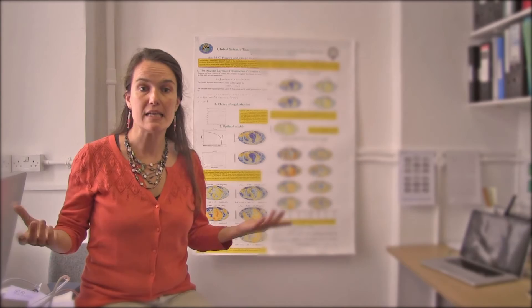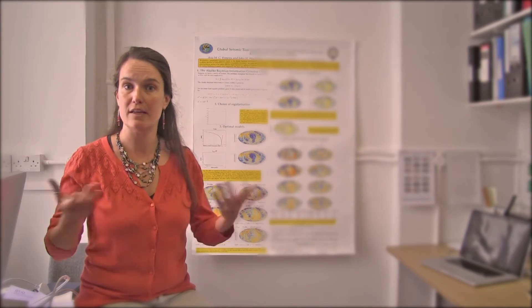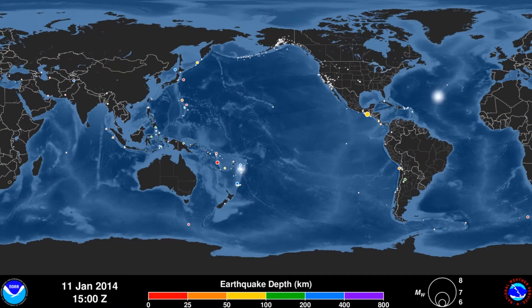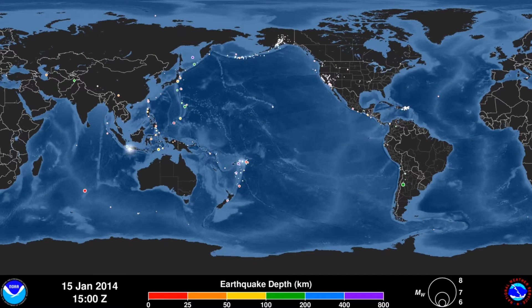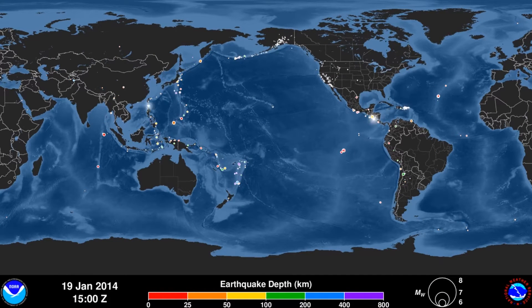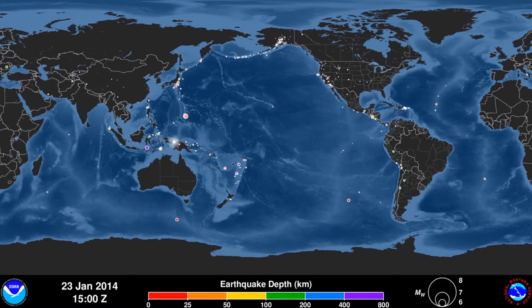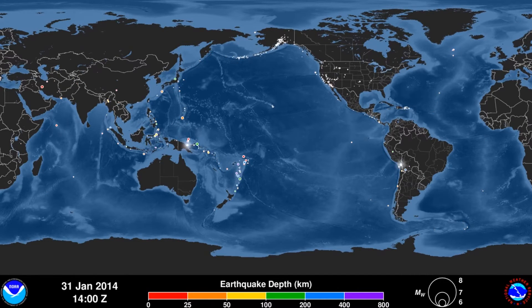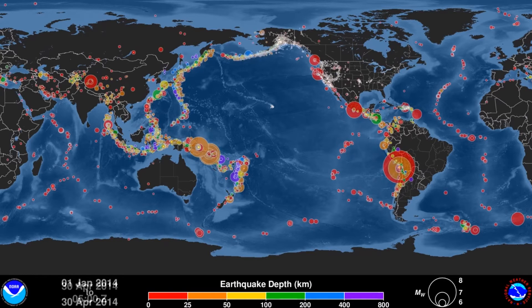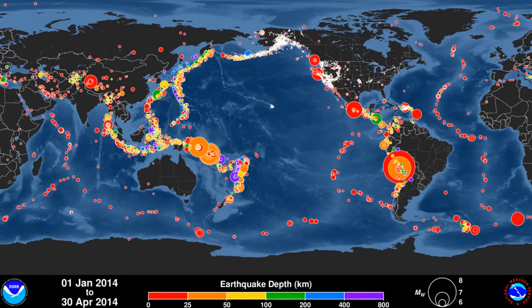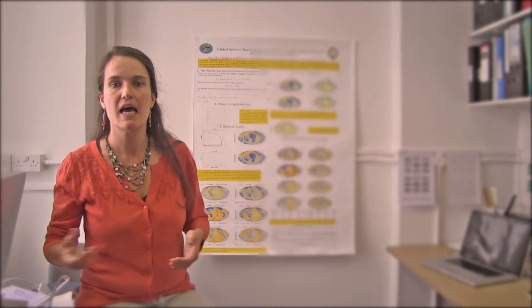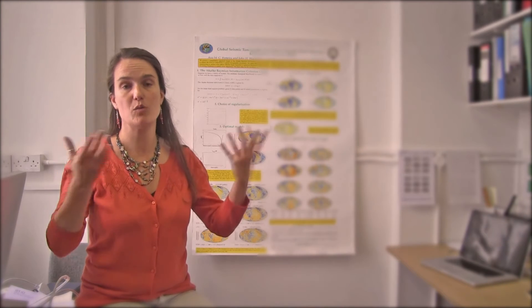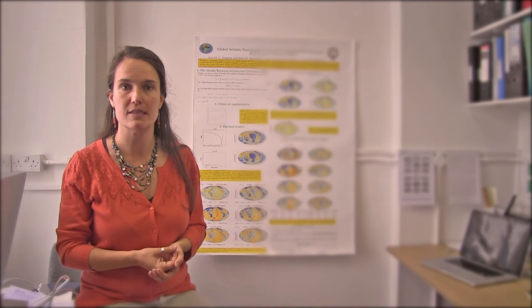Since the 80s, there exists a global network of seismometers all over the world from which we get continuous data that are recorded every day and that we can freely download from the Internet. I use huge volumes of data consisting of over a million seismic measurements that we can then use to build these detailed images of the Earth's interior.